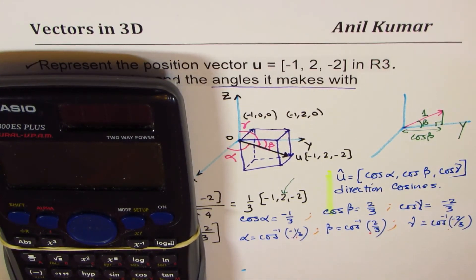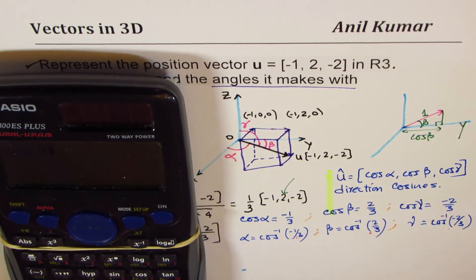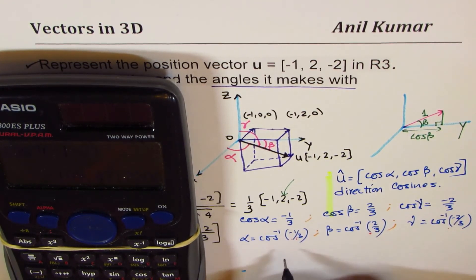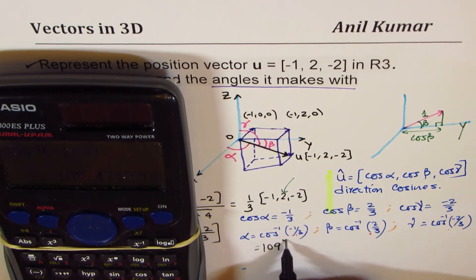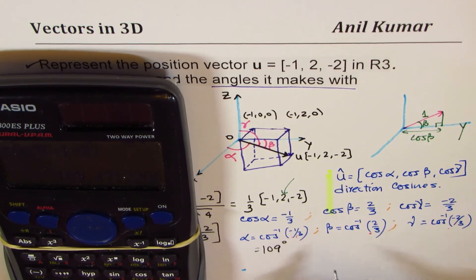So, α is cos inverse of -1/3, which is cos inverse -1 divided by 3, equals to 109.4. Let's keep it 109 degrees. We'll just round it.